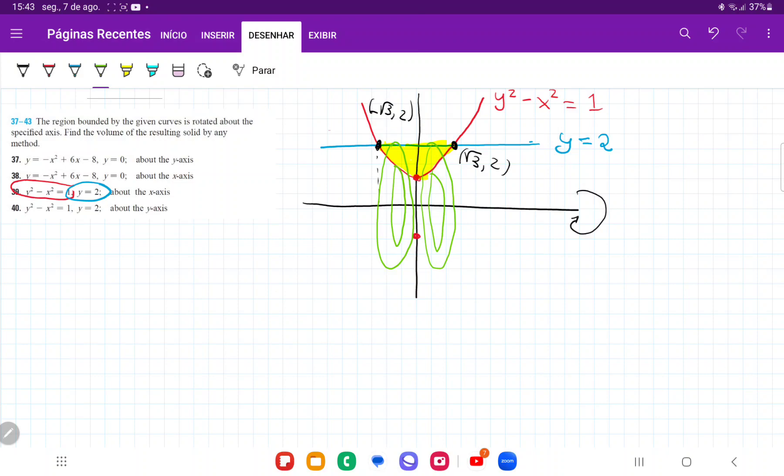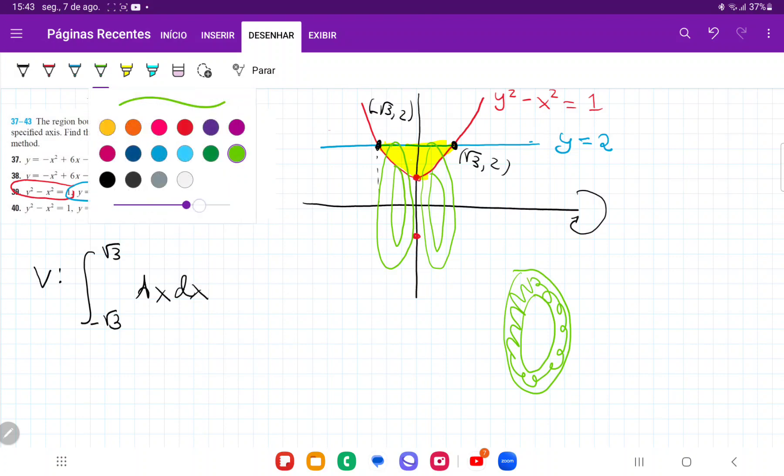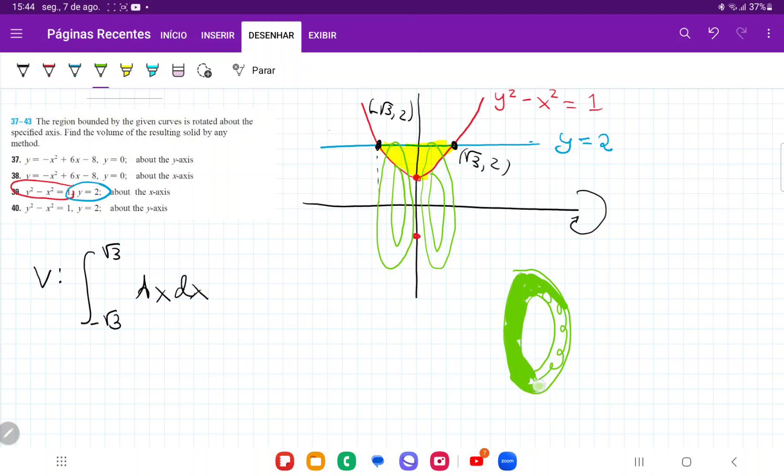Think of stacking these rings horizontally. So we have here that our volume is going to be the integral from negative root 3 to positive root 3 of A(x) dx. And the reason that it is A(x) dx is because each of these rings, they have an area. And so our area is going to be all this stuff right here. And it is a dx because we're stacking them up horizontally.